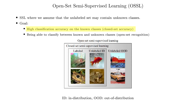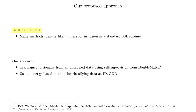Additionally, if unknown classes appear in training, it is reasonable to assume that these classes can also appear in deployment, which makes it important to identify these unknown classes at test time as a binary classification problem. Many existing methods for Open-Set Semi-supervised Learning try to identify which samples from unlabeled data belong to the ID classes, then use these data in a standard SSL scheme for training the model. We instead propose to learn unconditionally from all unlabeled data using self-supervision, and we incorporate an energy-based method to identify which samples belong to the known classes and which do not.